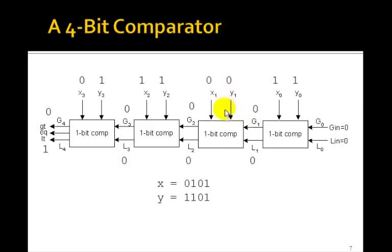x1 is equal to y1, therefore the equal got 1, but we don't have to pass it on because these are both 0. Here, x2 and y2 are both 1, so again, the equal would have been 1 here, but the g3 and l3 are still 0.